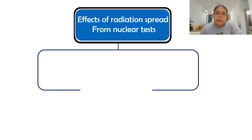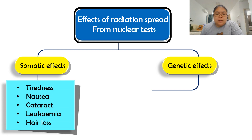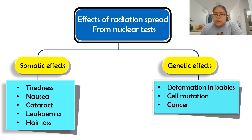Now we're going to see the effects of radiation spread from nuclear testing. There are two types: somatic effects and genetic effects. For somatic effects, the first is tiredness, then nausea, cataract, leukemia, and hair loss — these are physical effects we can observe. Genetic effects affect coming generations: deformities in babies, mutation, and cancer.